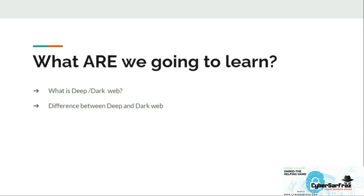Difference between the Deep Web and the Dark Web — we will discuss about the basic difference between both the webs. We'll also be discussing about the contents of each individual web. The Deep Web mainly contains records such as health records; we can say that the Deep Web is the document section of the internet. Again, this was just an overview — we will be discussing in detail in the upcoming lectures.